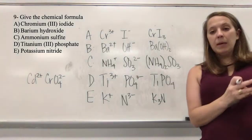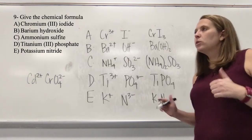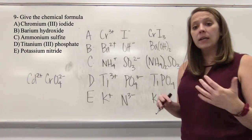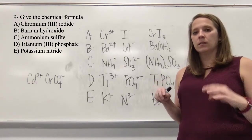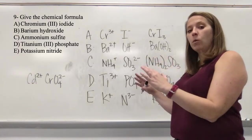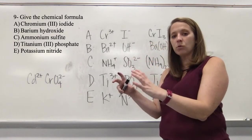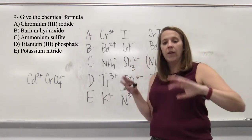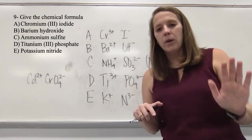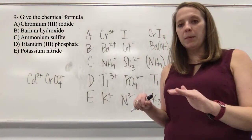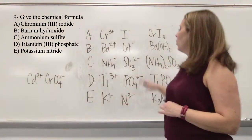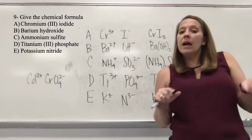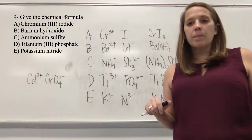Naming is really important. Being able to generate either the chemical name or the chemical formula will be part of what we learn this semester. On exam one there will be questions like: write the balanced equation for barium hydroxide plus chromium iodide, giving chromium hydroxide and barium iodide. We haven't talked about balancing equations yet — a lot of you are nervous about that — but it's coming next. Don't panic.